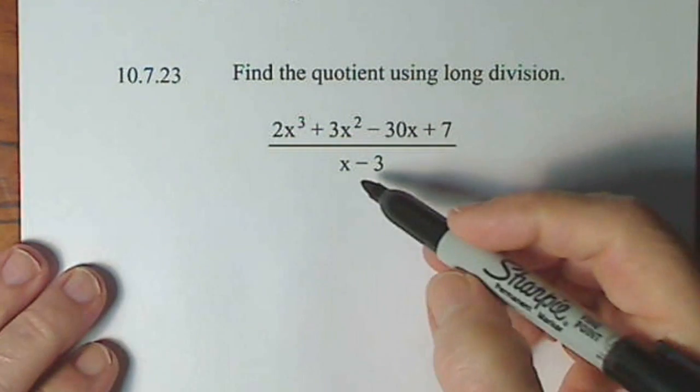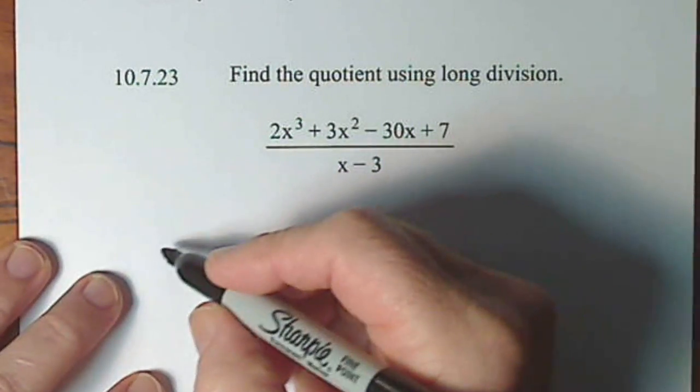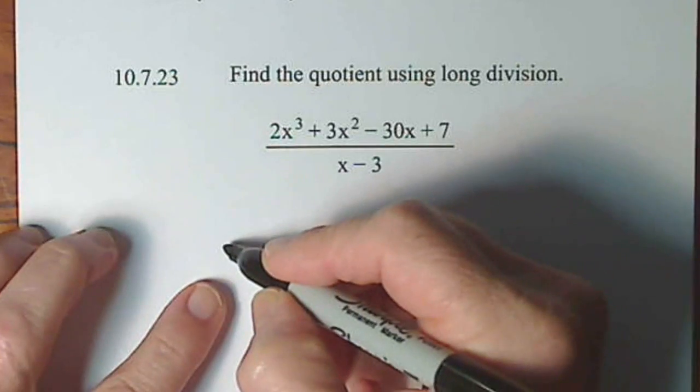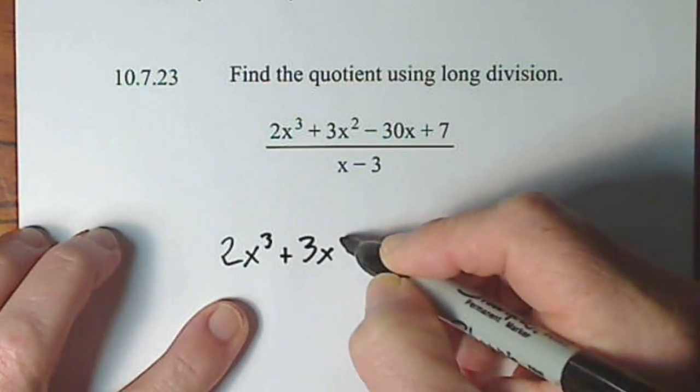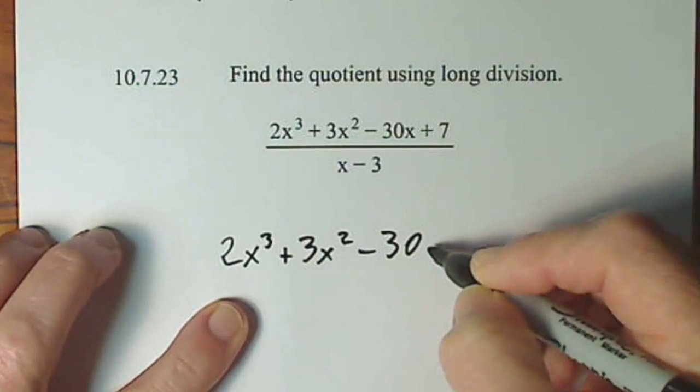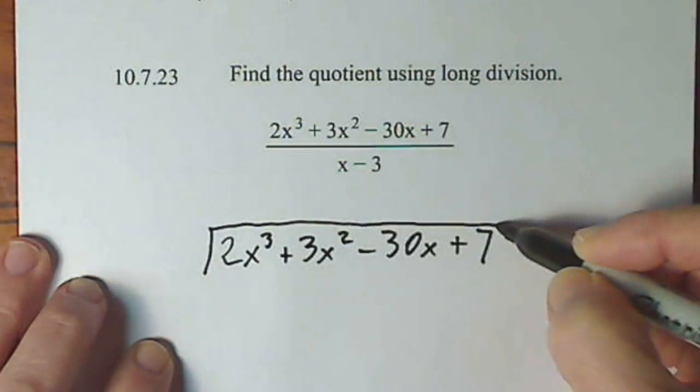It looks strange, but this is patterned after long division that you should be familiar with. So we'll start right about here. 2x to the third plus 3x squared minus 30x plus 7, and this is all going to be divided by x minus 3.